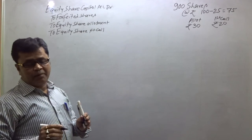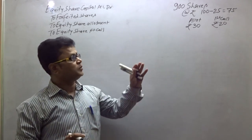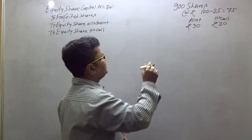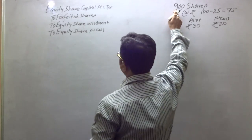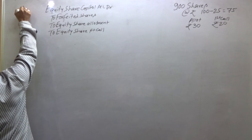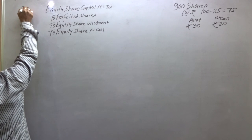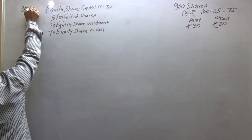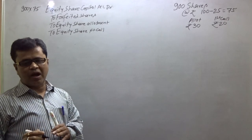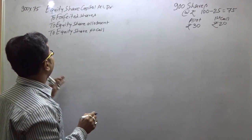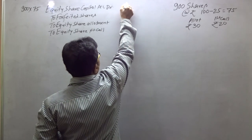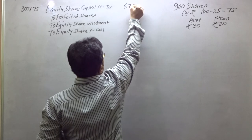Now look — the company has called ₹75 per share and the number of shares is 900. So 900 into 75 gives us the equity share capital amount. The called-up capital is 900 × 75 = ₹67,500.